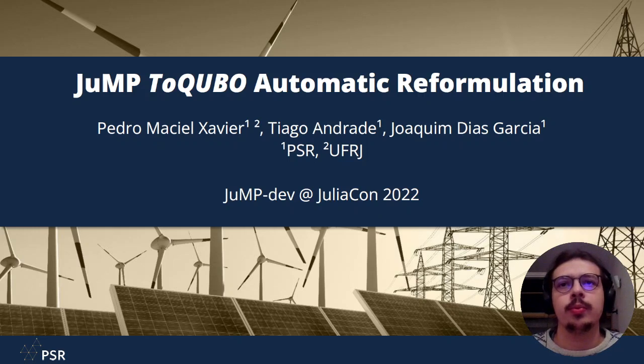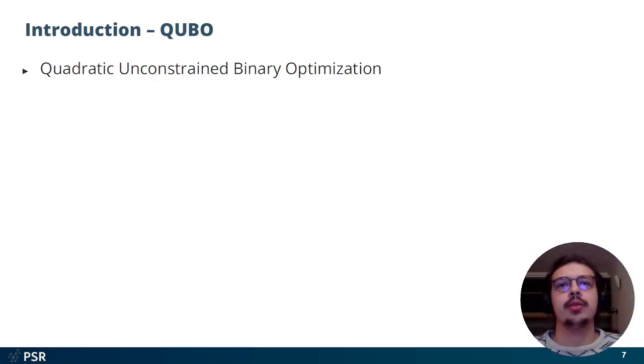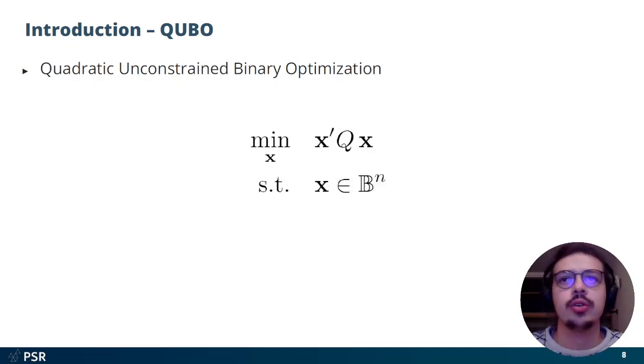To talk about Jump to QUBO reformulation, we must first define what is QUBO. For the non-initiated, QUBO stands for Quadratic Unconstrained Binary Optimization. That is, we have a quadratic objective function, we have no constraints, but all values must be binary.